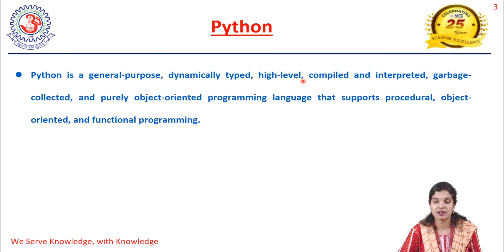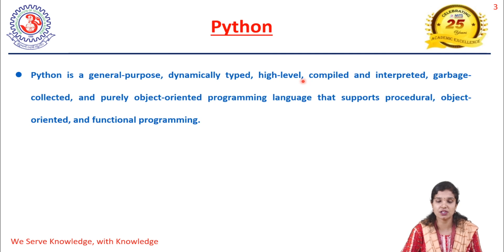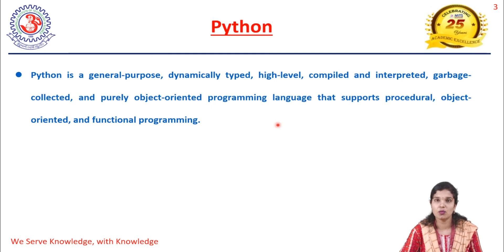Garbage collected means all unused objects are removed — it collects only the used objects, that is garbage collection. Python is also a purely object-oriented programming language, which depends on classes and objects. A class is a collection of objects. For example, the class 'vehicle' can have objects like car, motorcycle, and bus. Python is also a functional programming language.